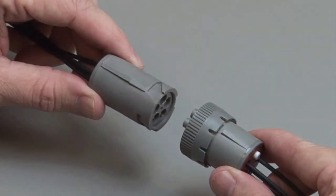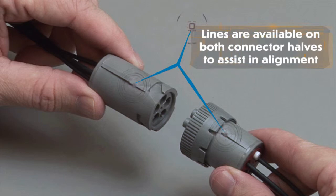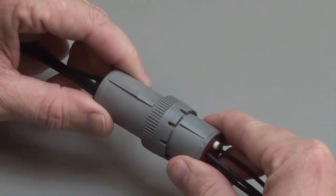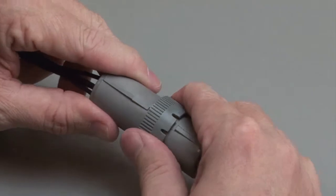When mating an HD 10 series connector, grasp the plug connector by the locking ring and line up the mating receptacle. Lines are available on both connector halves as a visual aid to assist in alignment. Turn the coupling ring on the plug until the plug and receptacle pull together and you hear and feel a click.